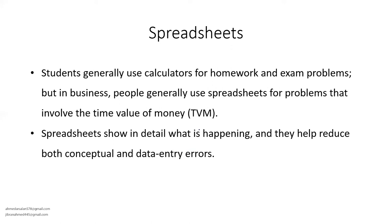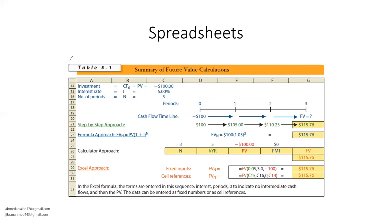The fourth method is a spreadsheet. Spreadsheets are basically Excel files where you go and put the formula in Excel and get your answer. Spreadsheets are more practical and you won't be able to use them in exams, but when you go into industry or a financial advisory firm, you'll be using these spreadsheets for calculation of future values. Here you put your investment, the interest rate, and the number of periods. Using all four methods — step-by-step, formula, calculator, and Excel — results in the same answer.